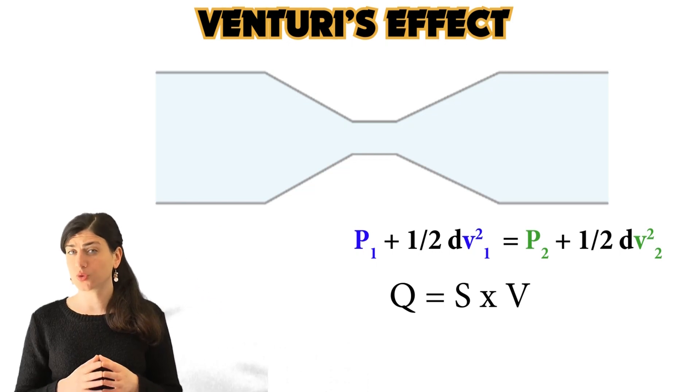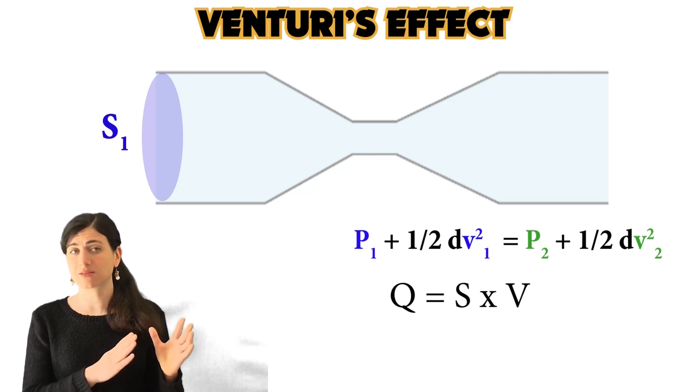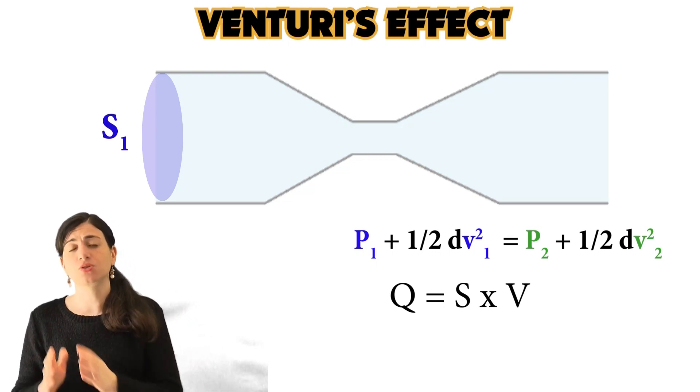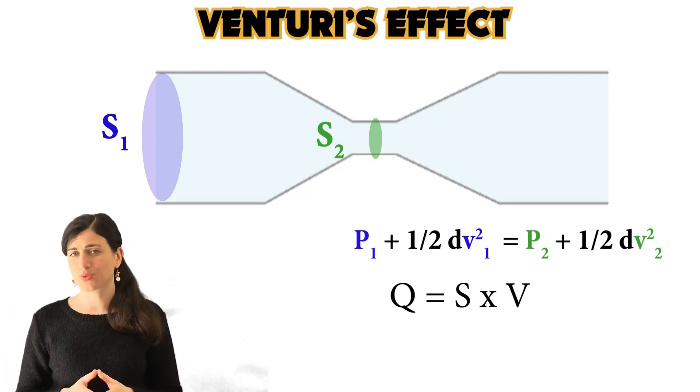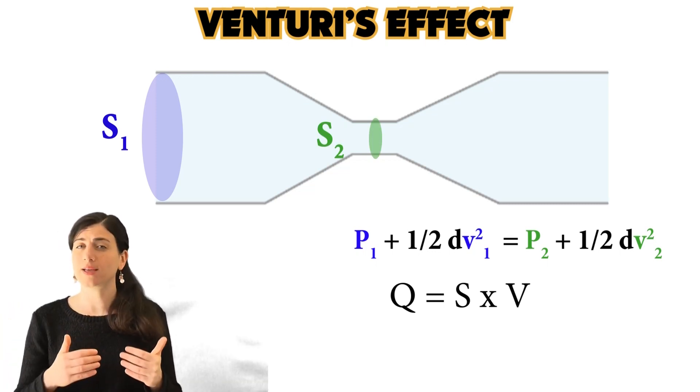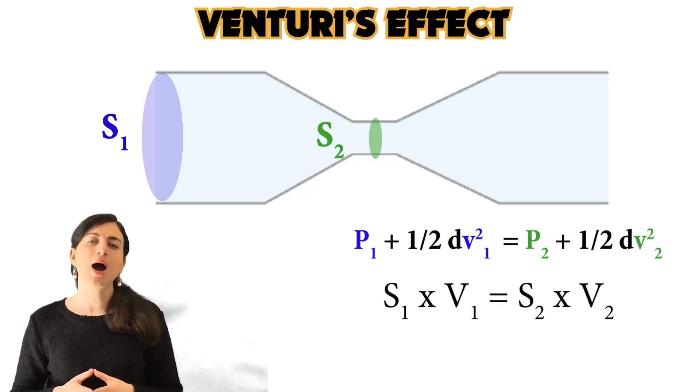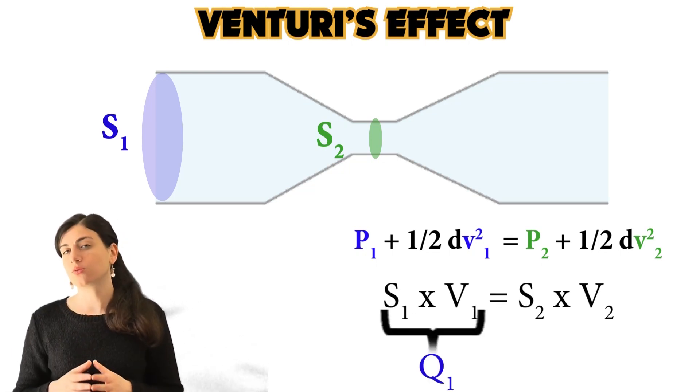However, as you can see in our tube, we have that section 1, so the section at the entrance of the tube, is bigger, much bigger than the section in the narrowing of the tube. So now, how can the flow rate at the entrance be equal to the flow rate in the narrowing? So how can Q1 be equal to Q2?